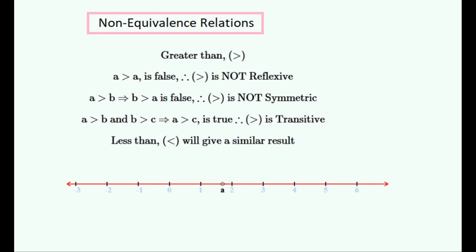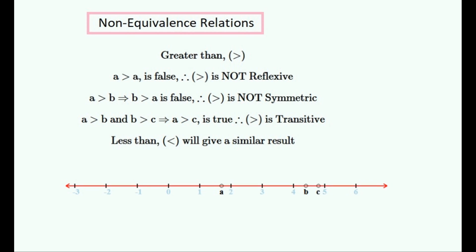We'll now observe why this relation is transitive and non-symmetric using the number line to illustrate this. We'll let A be a real number on this number line. The number B is forced to be on the right-hand side, being greater than A. It can't be both on the left and right of A at the same time, so it can't be symmetric. A third number C which is greater than B is on the right-hand side of B, and even if it is shifted only a tiny amount, it will always be on the right-hand side of A. So this relation is transitive.